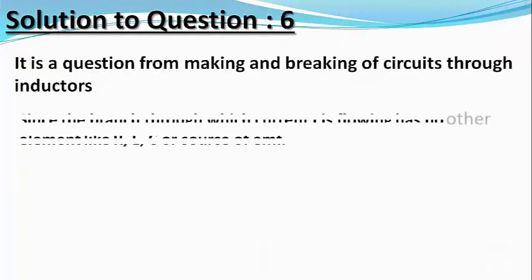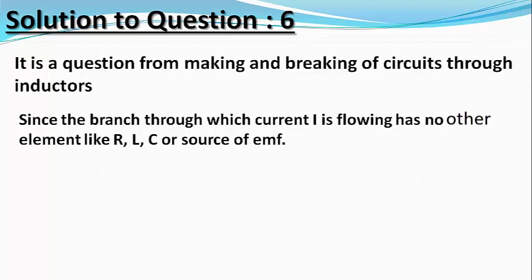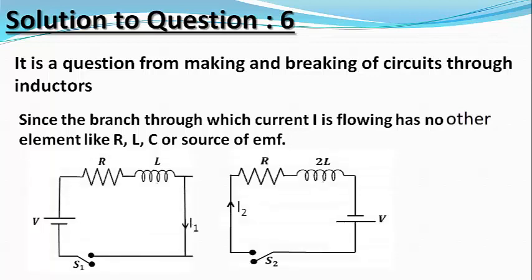A careful examination of the circuit reveals that the branch through which current I is flowing has no other elements like resistance, capacitor, inductor or batteries. Therefore, we can consider the given circuit to be made up of two separate circuits, one on the left and the other on the right. Due to the polarity of the batteries, the current in both circuits will be clockwise. Let I1 be the current in the left circuit and I2 be the current in the right circuit.